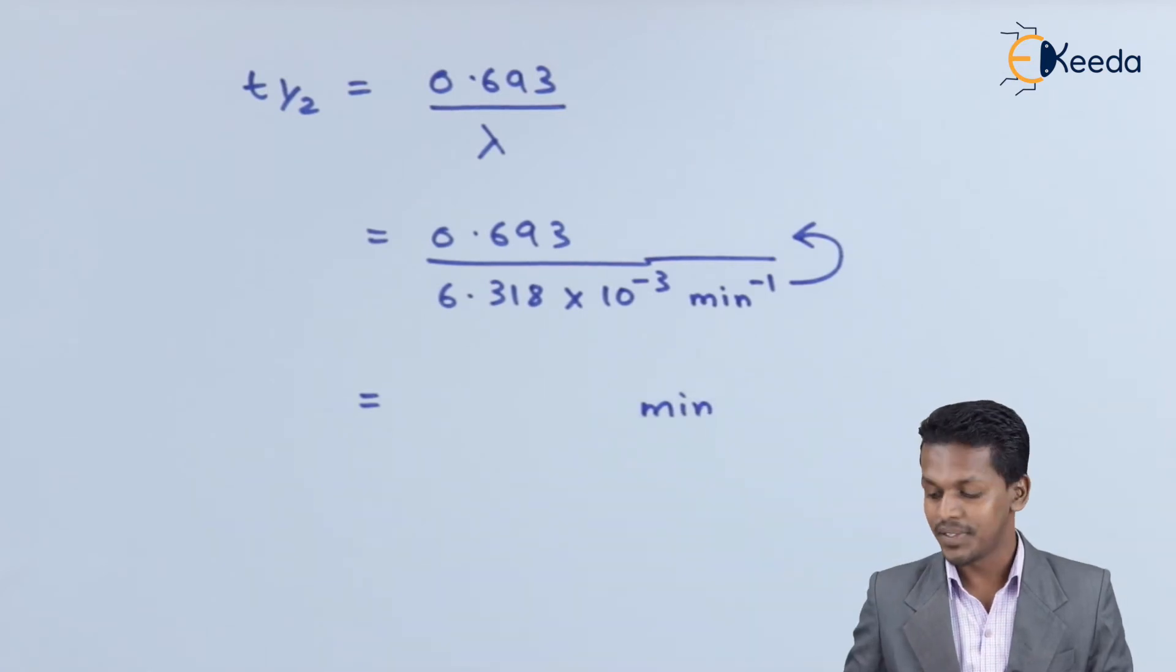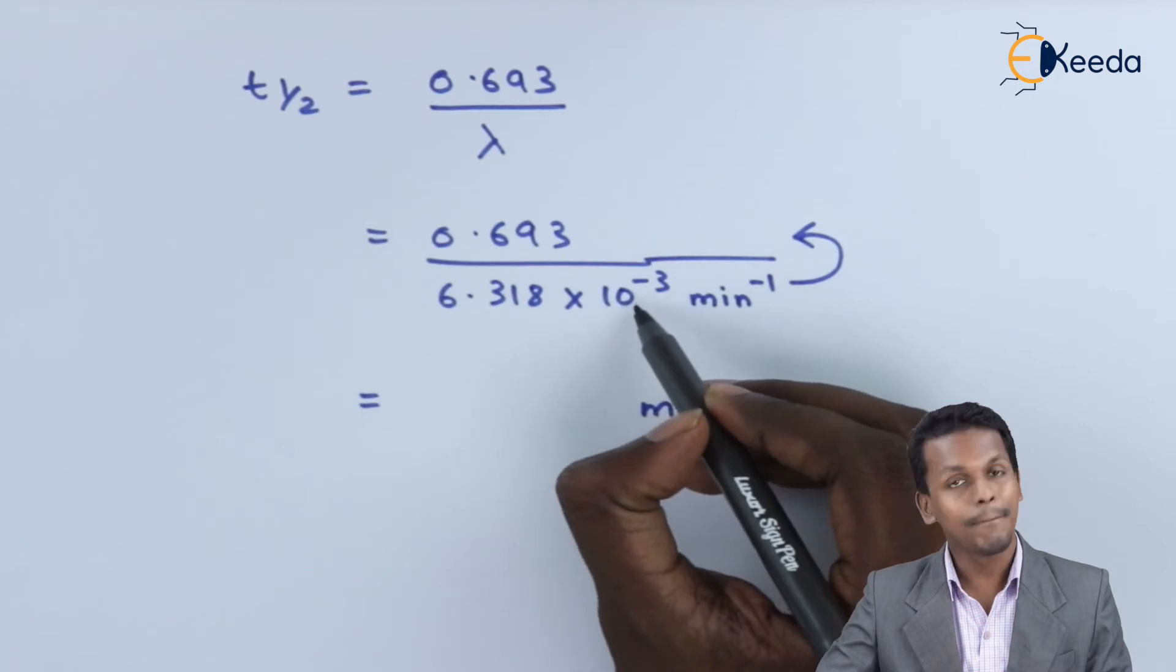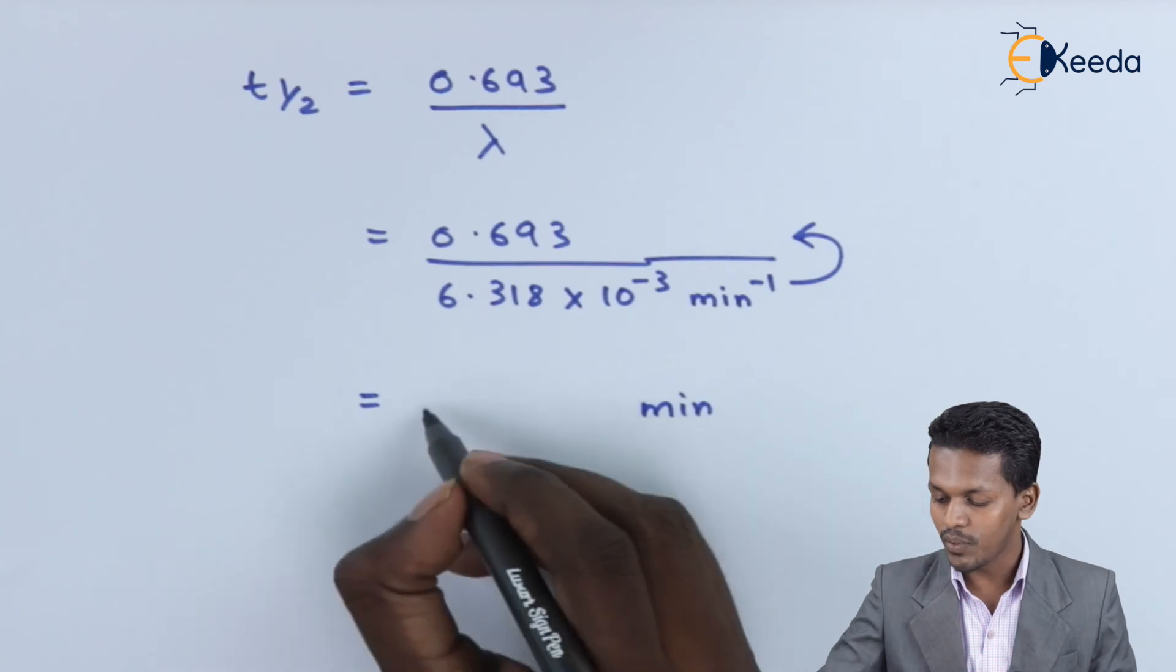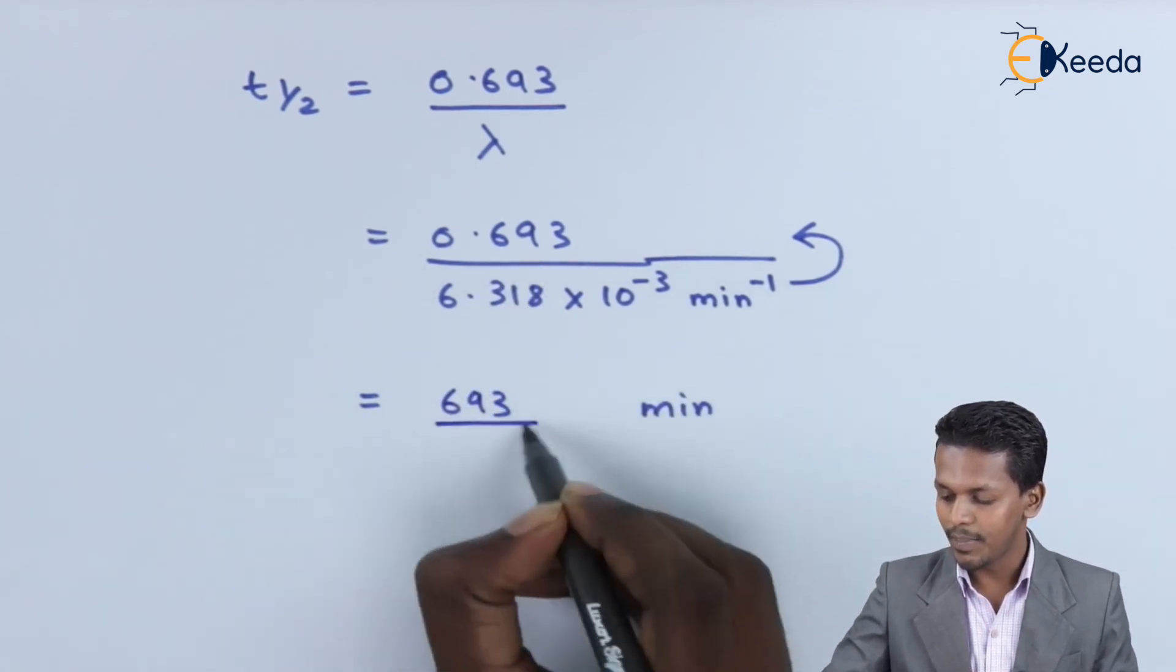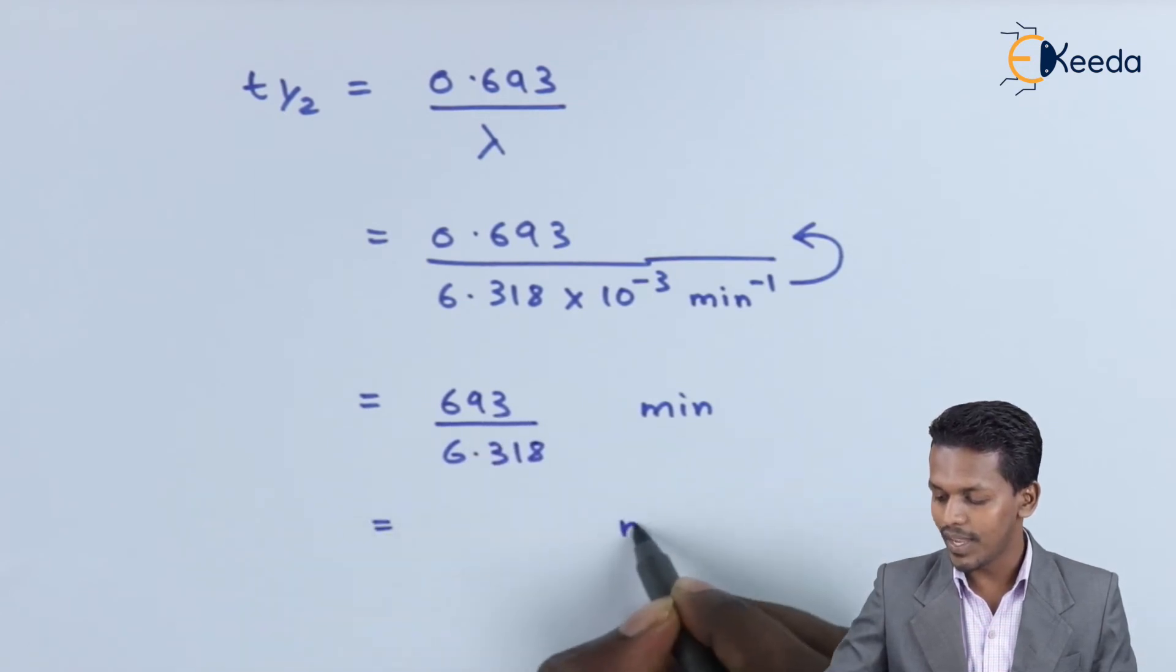Let's see what value we get. Therefore we have got a value of 109.68 minutes. This is the half-life value for the above numerical that we have solved.